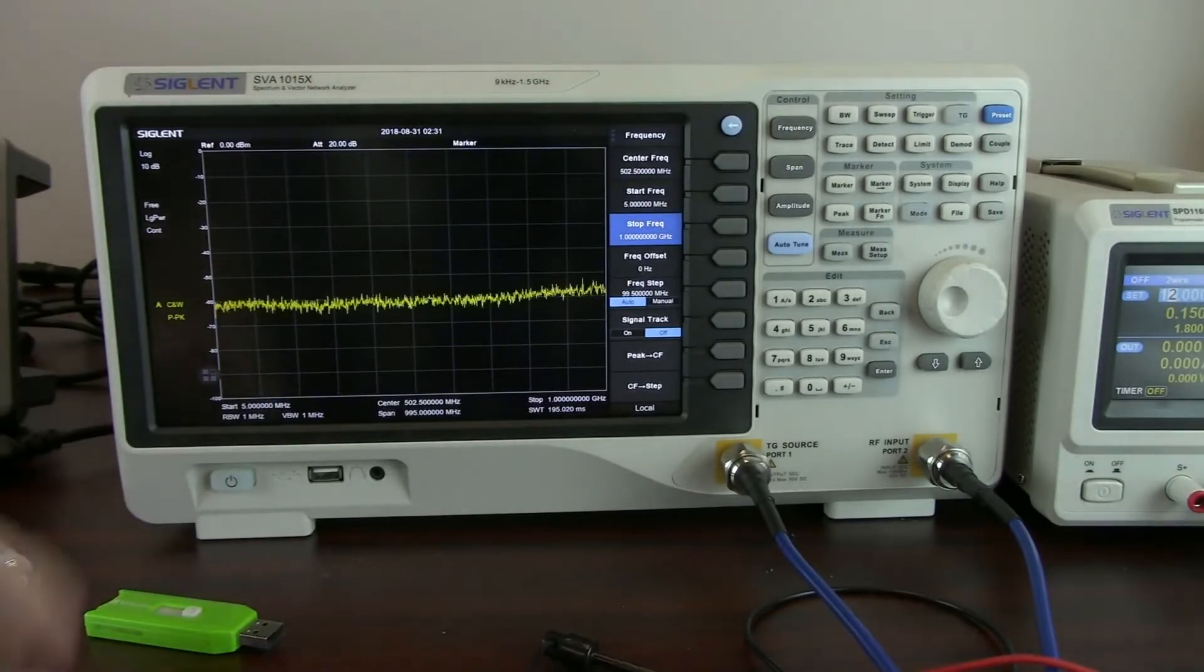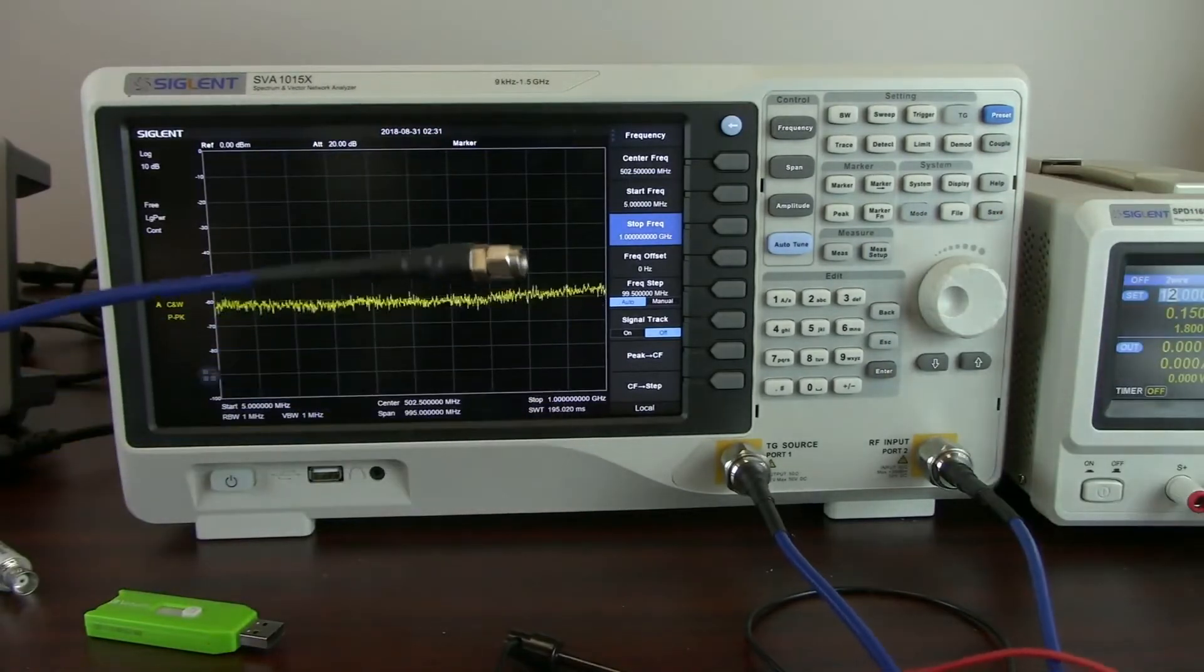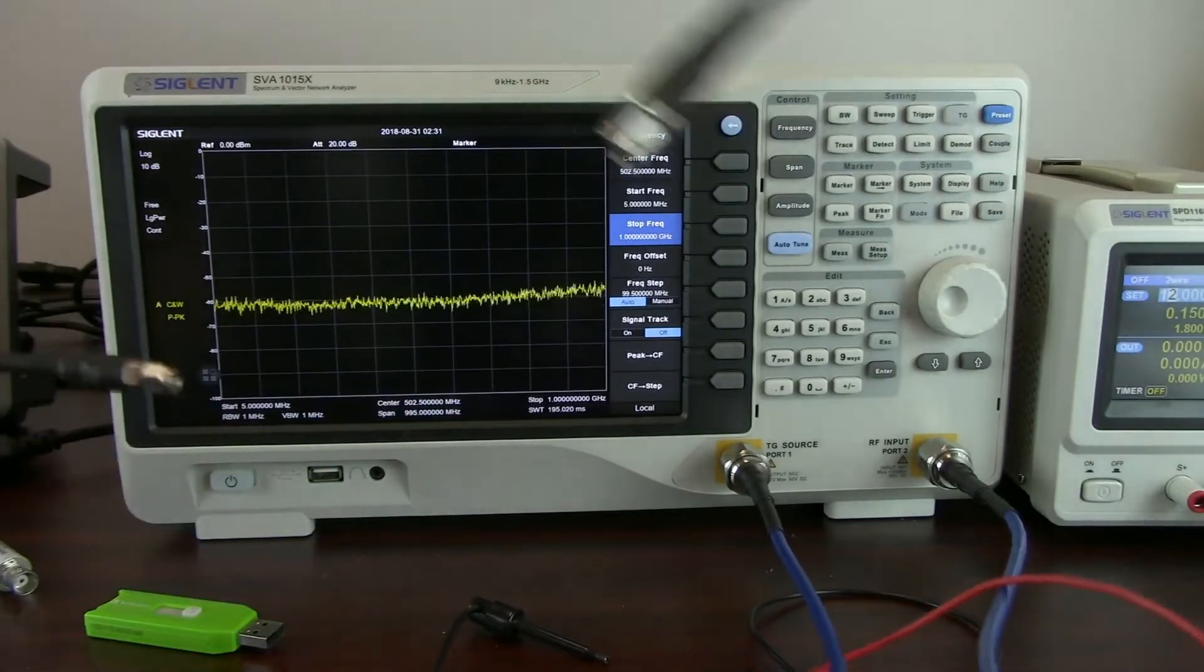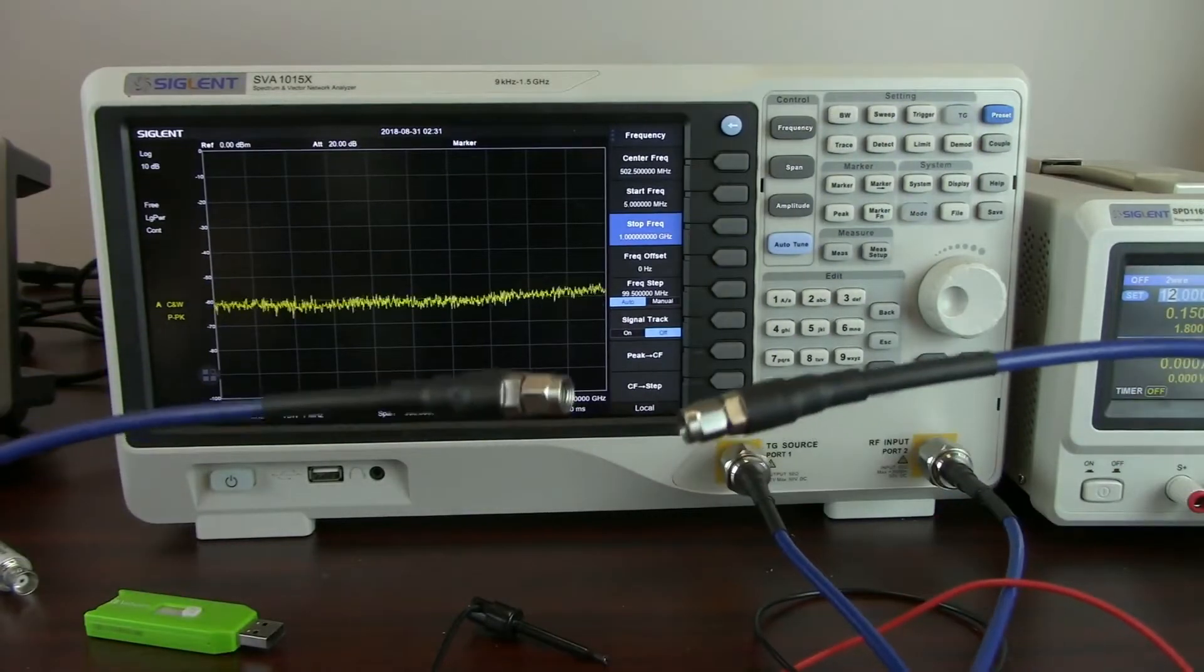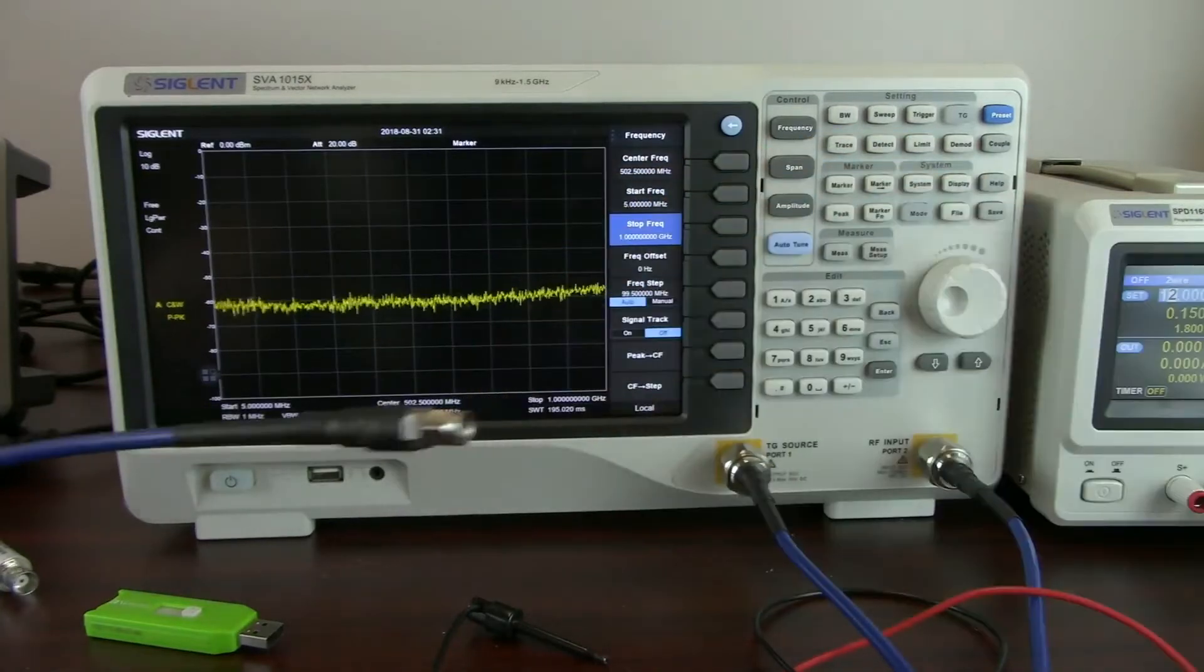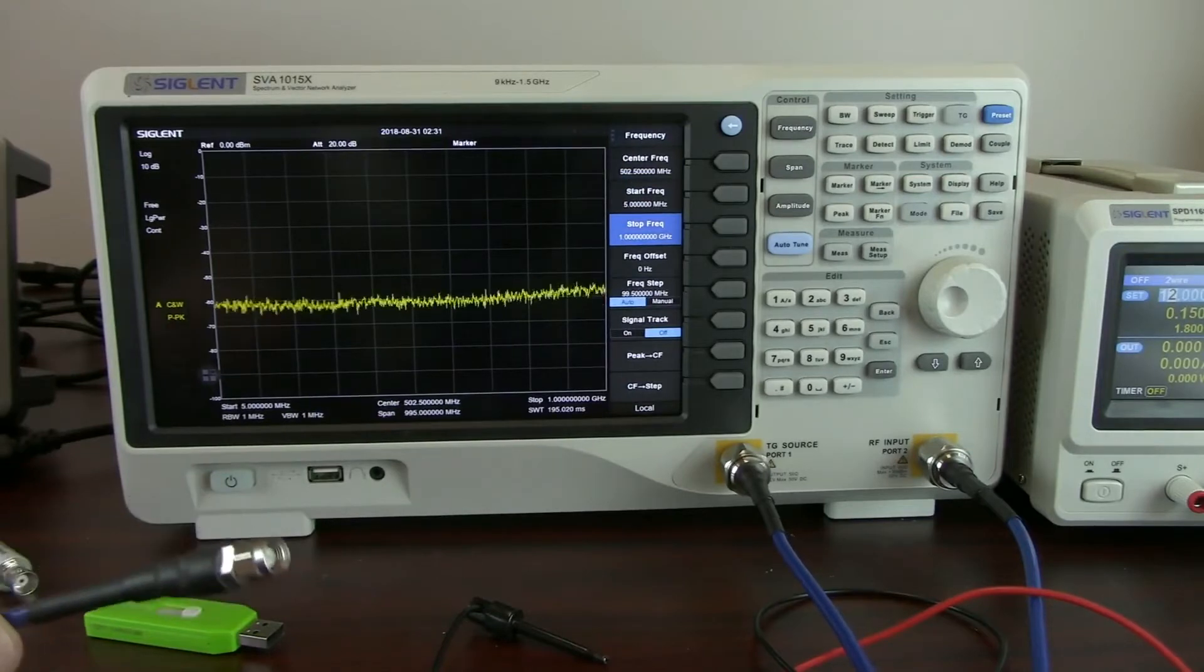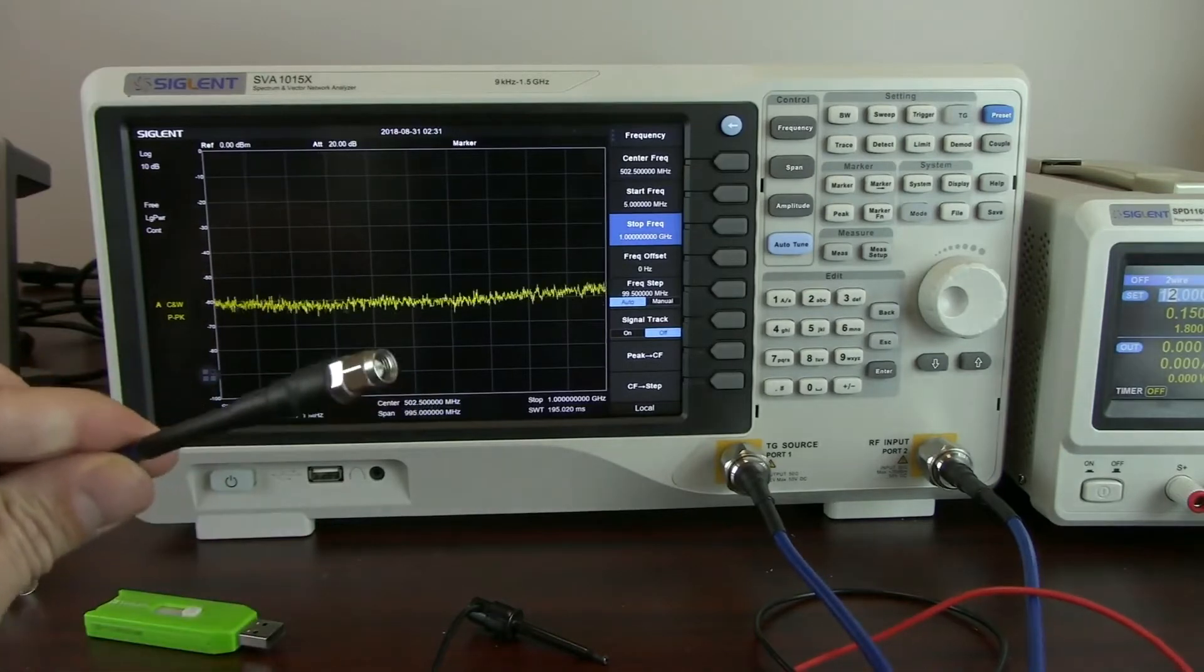The first step in this process, after we configure the display, we're actually going to normalize the cabling and adapters. As you can see we've got a cable here for the tracking generator, we've got a cable here for the RF input. They terminate in SMA connections, n-type on this side, SMA on this side, and the cabling is going to add a certain level of error to the measurement. We can actually use normalization to decrease the effects of this error on our measurement.